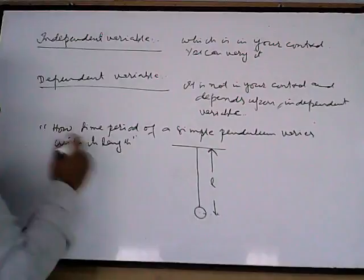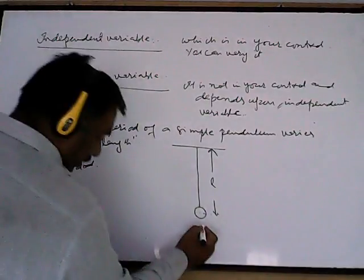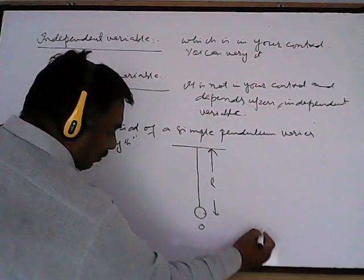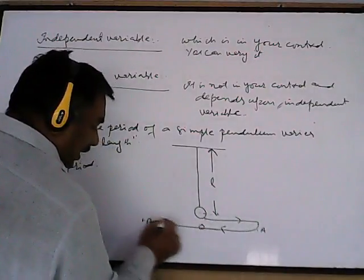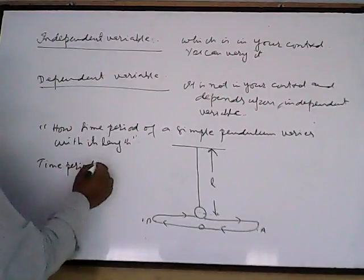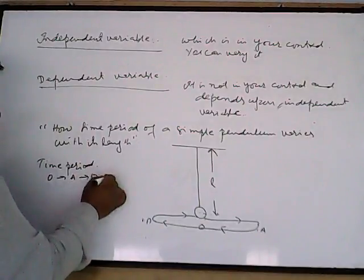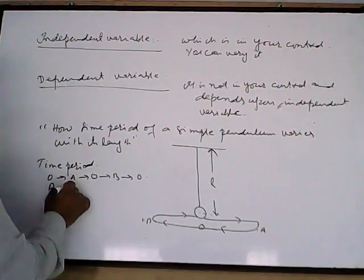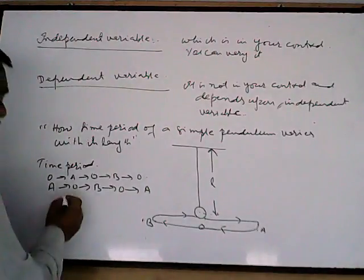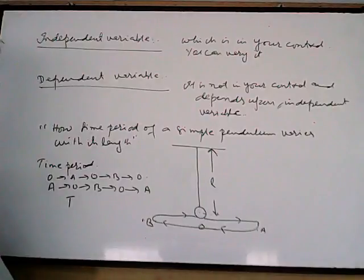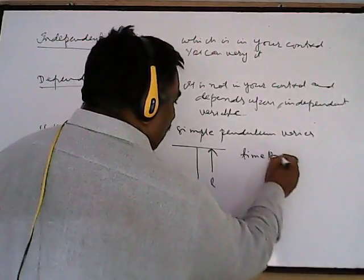Time period means the time for a complete round trip. If the equilibrium position is O, the pendulum goes to extreme position A, then to B, and back — that is one oscillation. Time period T is the time from O to A, A back to O, O to B, and B back to O. Time period is usually denoted by capital T.